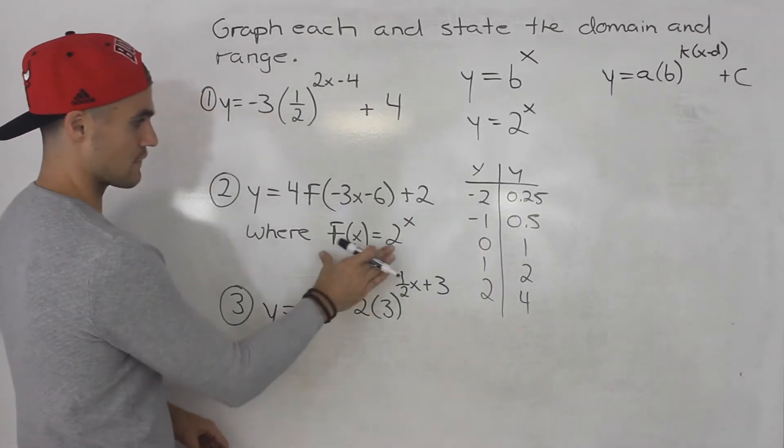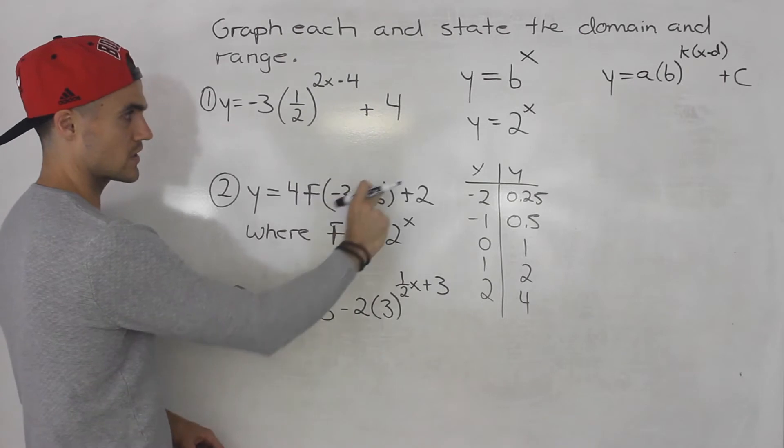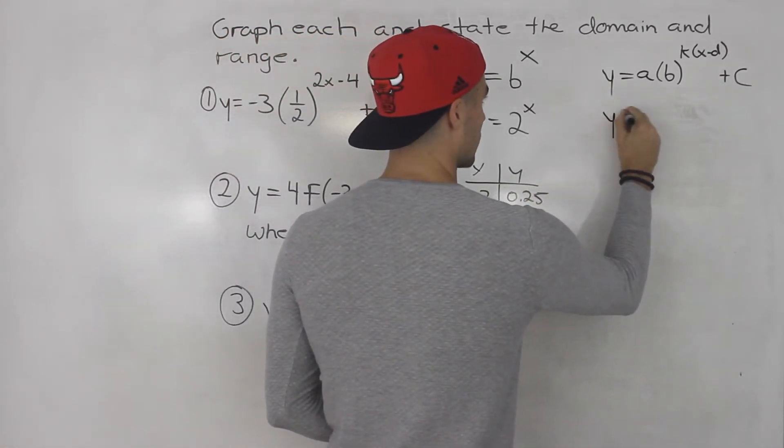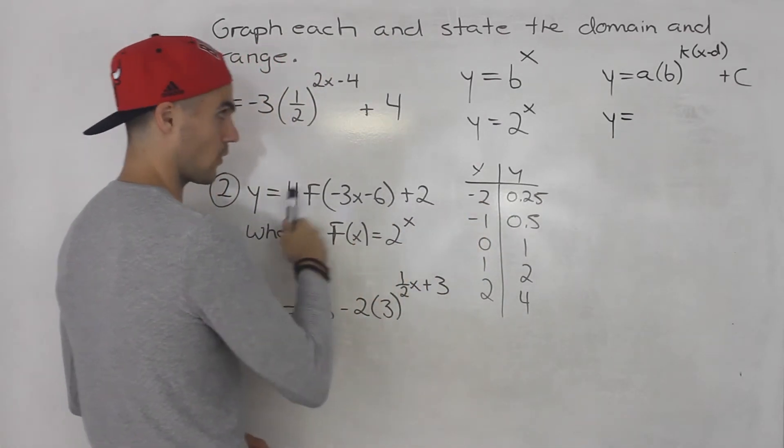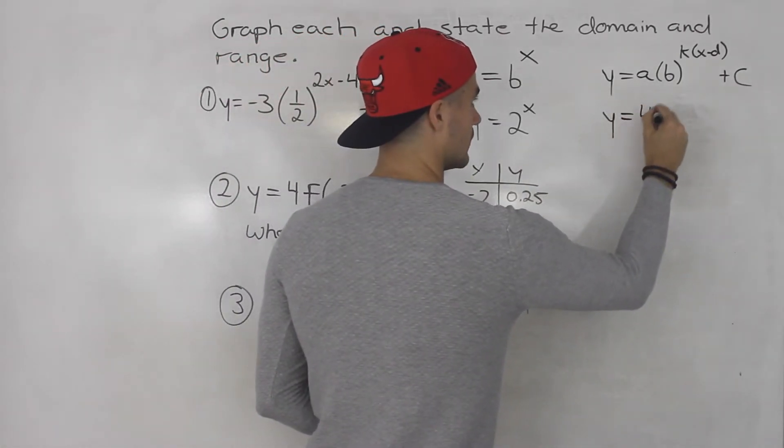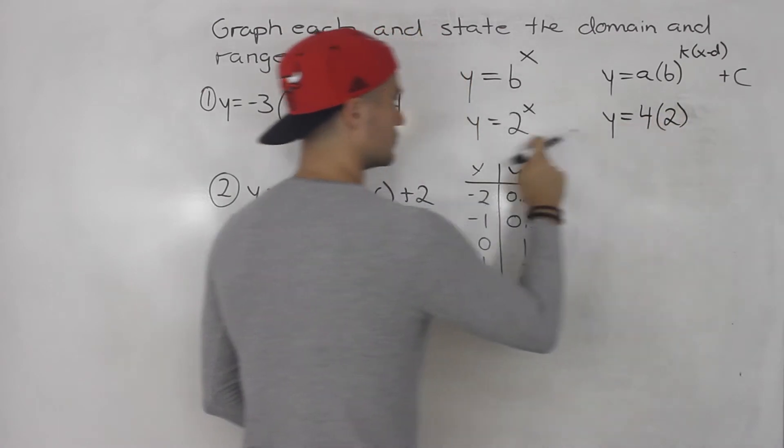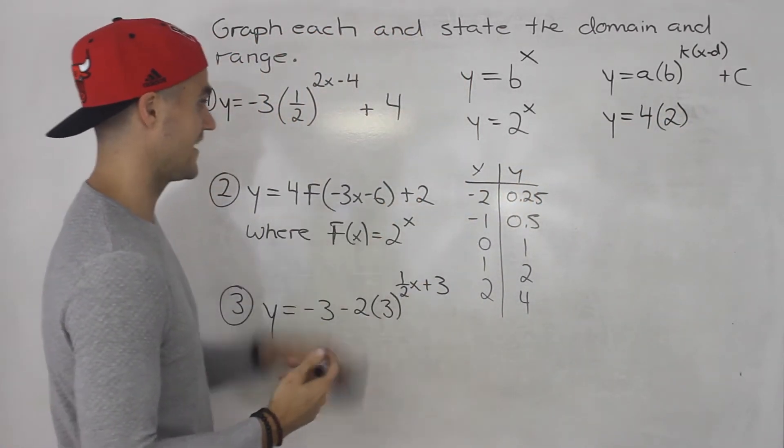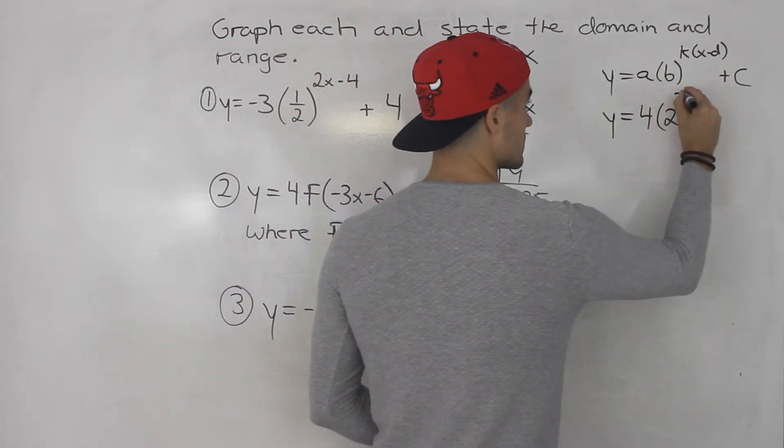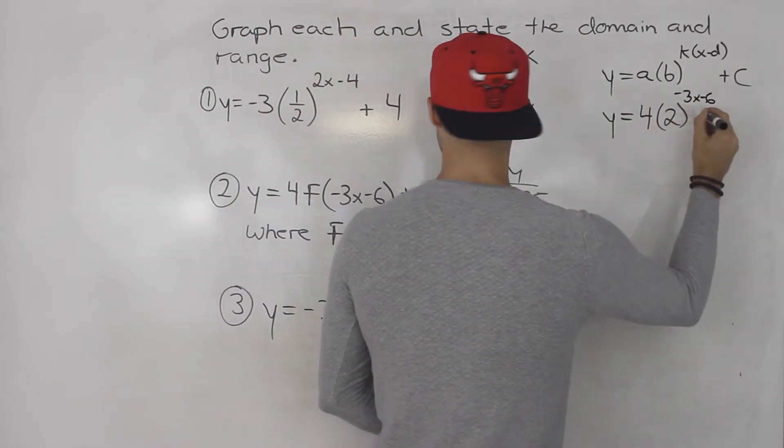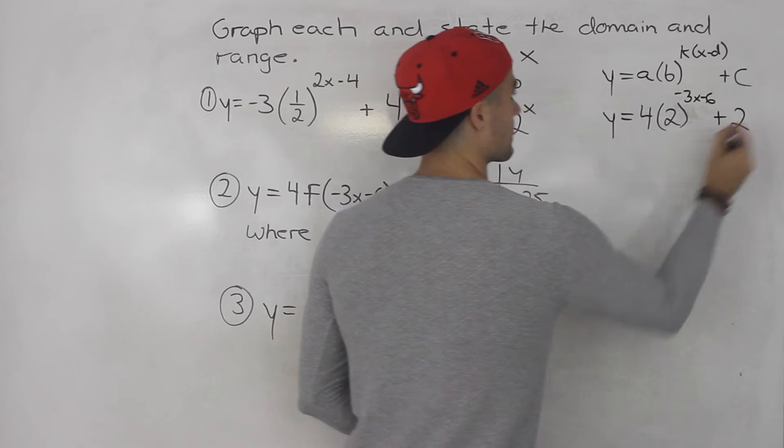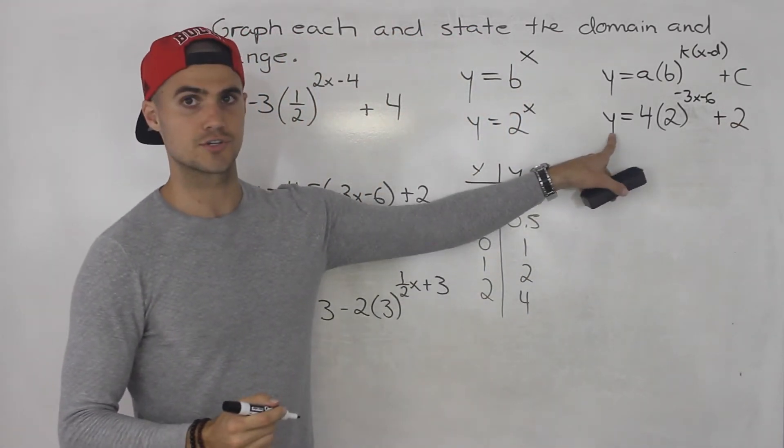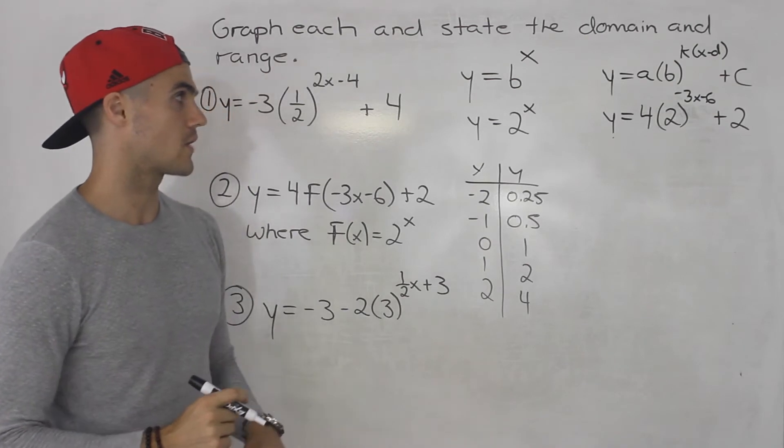So if I take this function and apply these transformations to it, the way it's going to look is we'll have y equals 4 in front, 2 - right that's the base, that's the parent function we're dealing with - to the power of negative 3x minus 6 plus 2. All right so that is the function that we are going to be graphing.